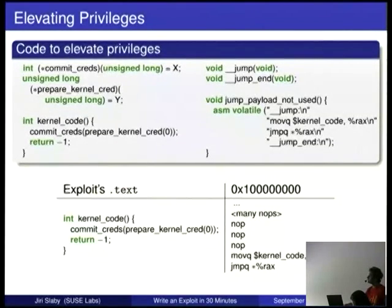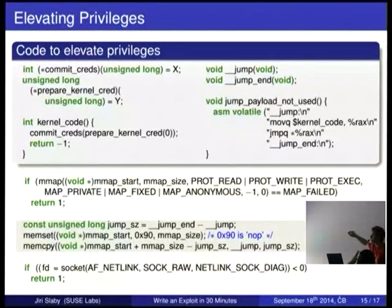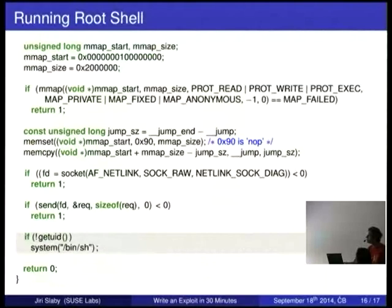So how do I do this in the code? It is simple. It is just memset the whole space with NOPs and just copy this hunk at the end of the space. Exactly. Kernel will jump somewhere in the middle and skip to the end, which is this, which calls this. And I'm root from that moment. So after I actually send the message, I should be root. The only remaining thing to do is to just find out if I'm really root, if the exploit worked, and run a shell.